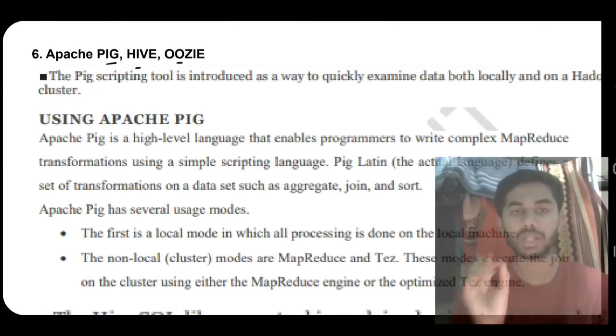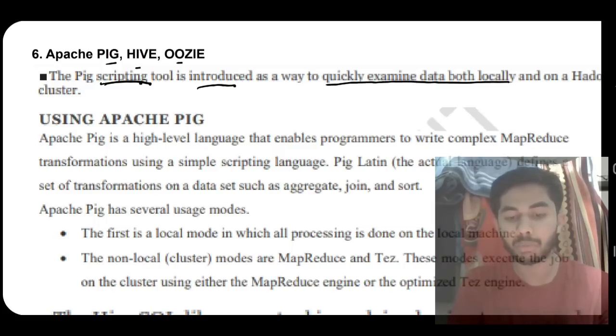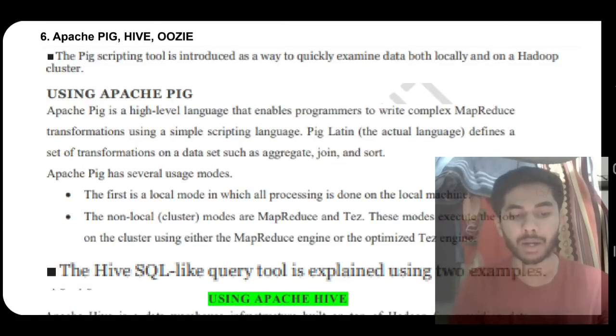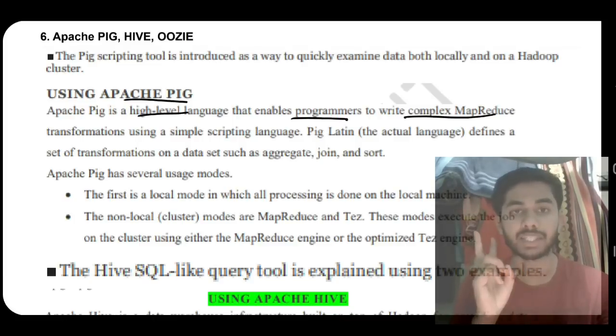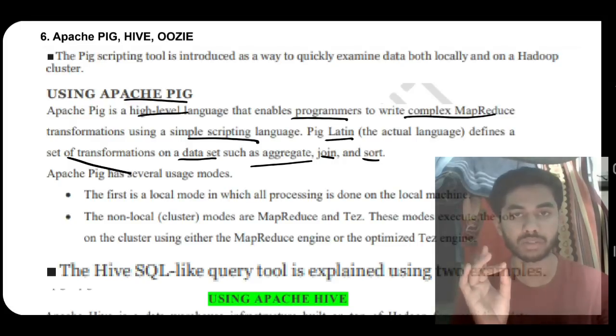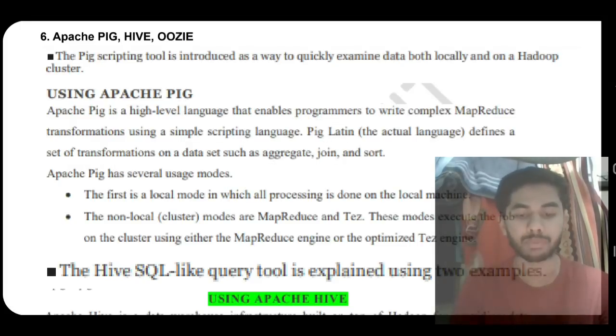The next super important question is Apache Pig, Hive, and Oozie. What is Pig? Pig is a scripting tool introduced as a way to quickly examine data both locally and on Hadoop cluster for analyzing data. It is a high-level language that enables programmers to write complex MapReduce transformations using a simple scripting language. Pig Latin is the language used for it. It's used for transformation of data such as aggregate, join, and sort operations.